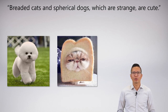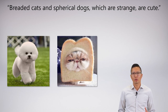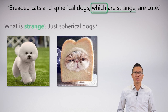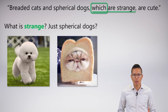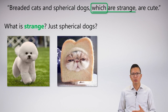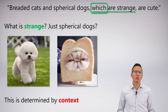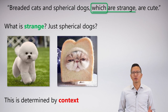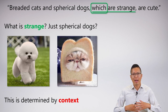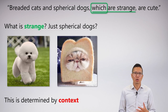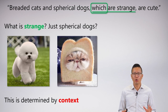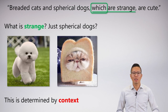Here's another example: 'Breaded cats and spherical dogs, which are strange, are cute.' I moved the non-restrictive clause and I still have the same question — what is strange? Is it just the spherical dogs, or the breaded cats too? When I say 'breaded cats and spherical dogs, which are strange', it's a bit unclear. In this example, the answer is really determined by context. I don't want to ask questions like this on a test. This is something I'm pointing out so you know that in regular English usage, this can be ambiguous.